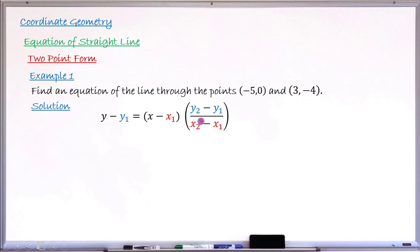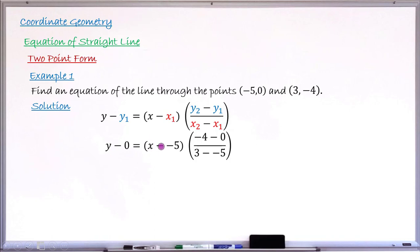Let the first point be (x₁, y₁) and the second point be (x₂, y₂). We now substitute: y₁ is zero, x₁ is minus five, so we have y minus zero equals, in the first bracket, x minus minus five, times the second bracket. Inside that second bracket: y₂ minus y₁ is minus four minus zero, over x₂ minus x₁, which is three minus minus five.